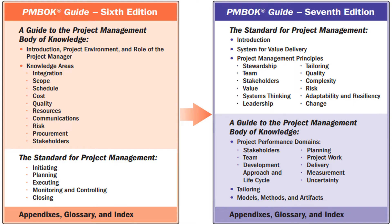In the 7th edition, instead of starting with the guide section, they begin with the standard of project management as the first section, then detail the guide to the project management body of knowledge. As part of the standard, the main focus shifts to the system for value delivery, and they introduce 12 major principles: stewardship, tailoring, team, quality, stakeholders, complexity, value, risk, system thinking, adaptability and resiliency, leadership, and change.